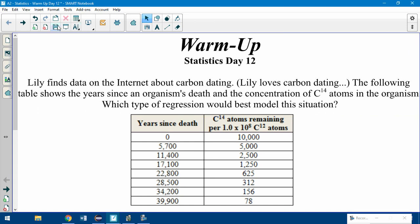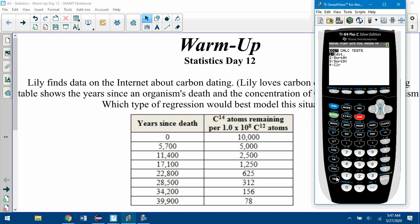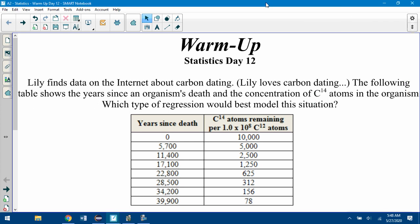Hopefully you went to stat edit. In L1 you put all the years since death, and in L2 you put the amount of carbon-14 atoms remaining. Then if you go to zoom 9, assuming that your stat plot is still on, go to second Y equals, plot one should be on, and we want the type to be scatter plot. If I go zoom 9, you get that type of shape.